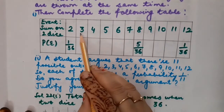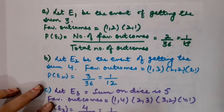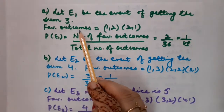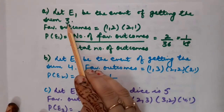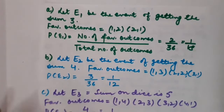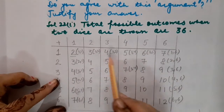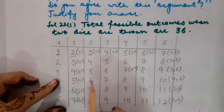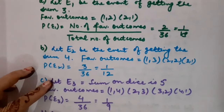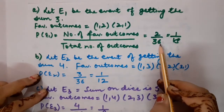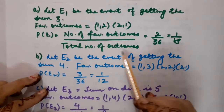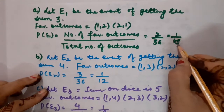Now I start the solution with sum equal to 3. Let E1 be the event of getting the sum as 3. The favorable outcomes from the table are (1,2) and (2,1), because no other outcome shows a sum of 3. There are 2 favorable outcomes. So the probability of event E1 is 2/36, which simplifies to 1/18.